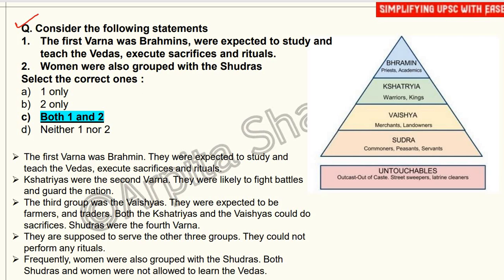Kshatriyas protected people, fought battles, and guarded the nation. Vaishyas were expected to be farmers, traders, or business people. Both Kshatriyas and Vaishyas could perform sacrifices like havans and yagyas. Shudras — the fourth varna — were supposed to serve the other three groups and could not perform any rituals. This was the misinterpretation of the Varna system by the first three groups.